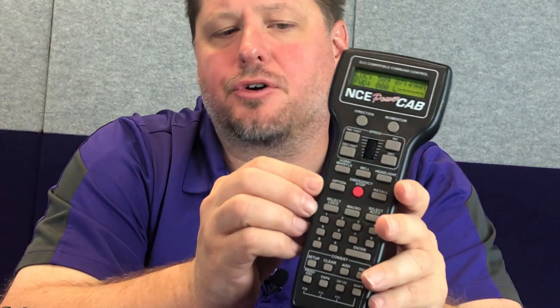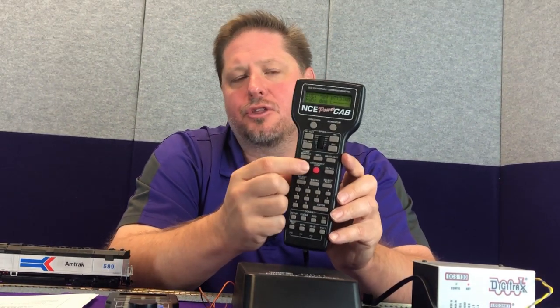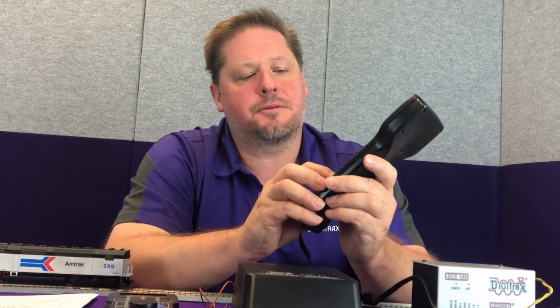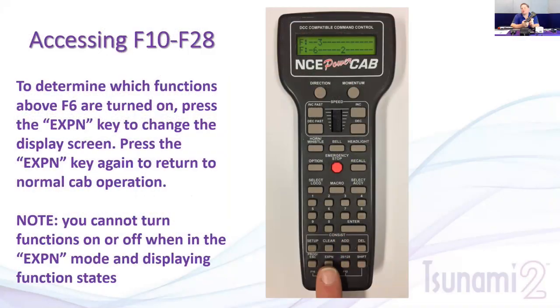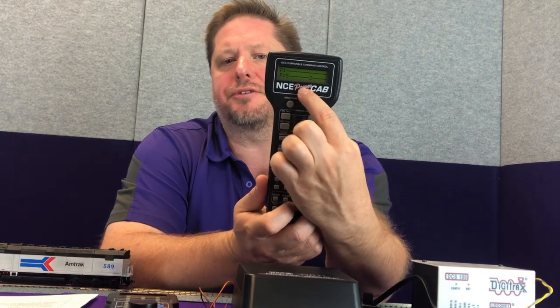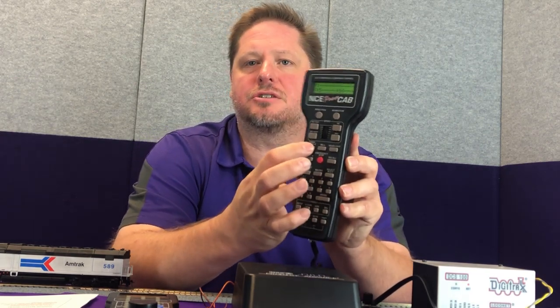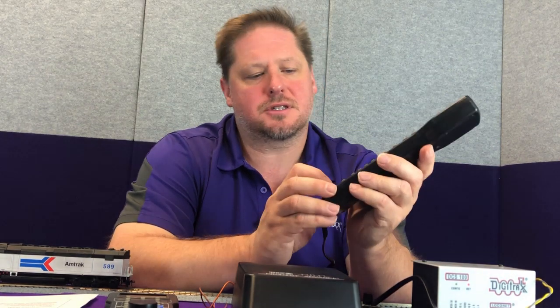The NCE Power Cab and Pro Cab also have an option button that acts as a soft key — you can reassign its purpose. I've set it up to access higher functions, so function 23 would be 'option, option, 3.' There's also an EXPN button (expansion) at the bottom. Pressing it shows a list of all functions and their current state — which are on and which are off. In expansion mode, you can view but not change function states. Push EXPN again to exit.